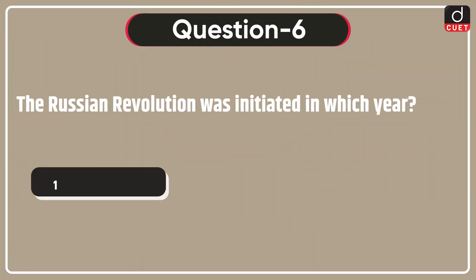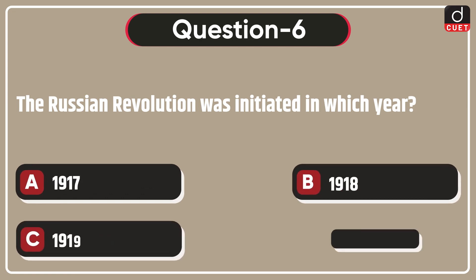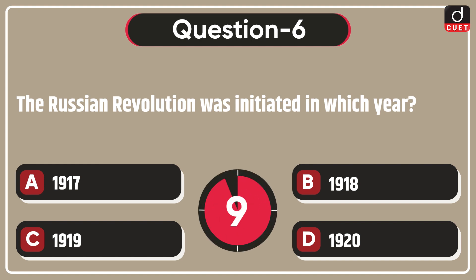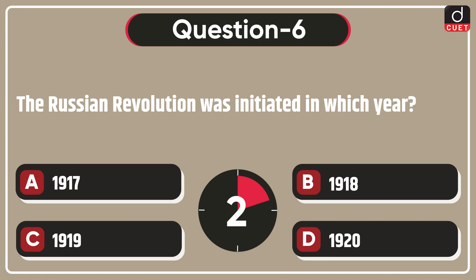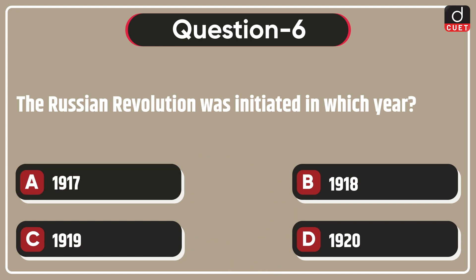Next question is, the Russian Revolution was initiated in which year? 1917, 1918, 1919, or 1920? The correct answer is option A, 1917.